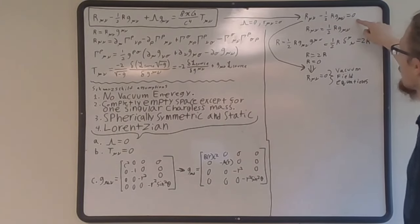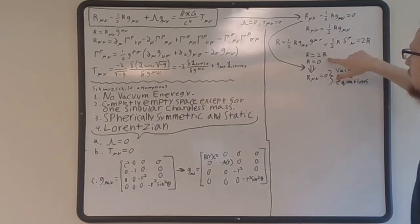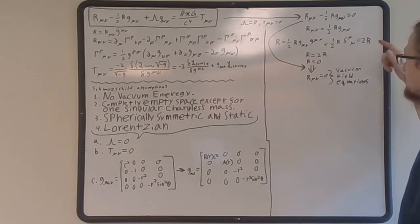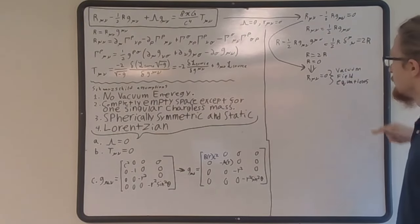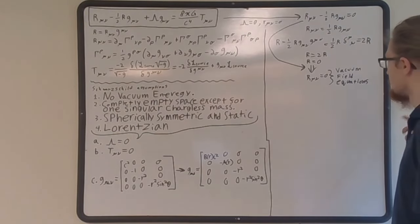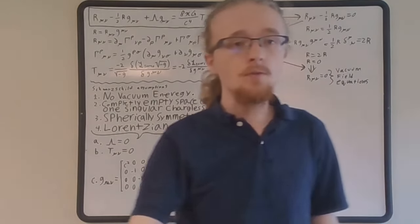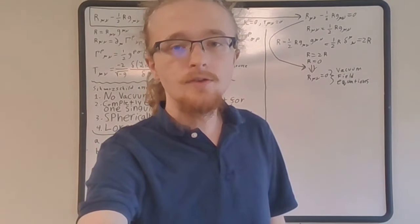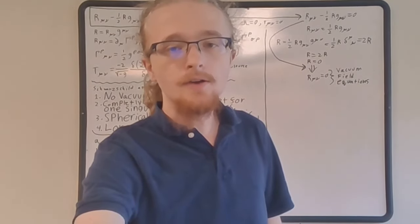First, simplifying the EFE with the Schwarzschild assumptions: the cosmological constant is zero and the stress-energy-momentum tensor is zero. Plugging these in and taking a trace of both sides, we ultimately arrive at R equals twice the scalar curvature, which gives R equals zero. Plugging that back in gives the Ricci curvature tensor equals zero — so our geometry is Ricci flat. These are the vacuum field equations.